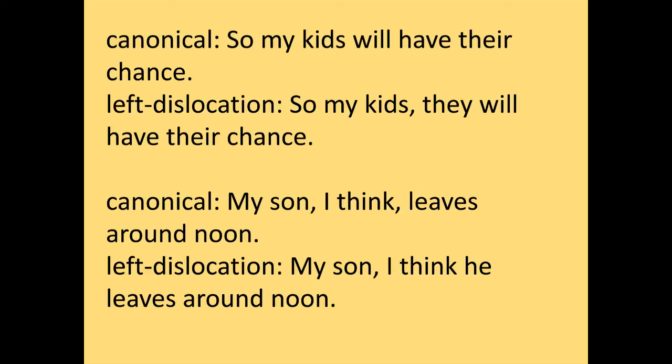The canonical version is 'My kids will have their chance.' This is left dislocation. 'Left' is a term biased towards writing systems like English that go from left to right. The point is: you take something out, put it to the beginning of a sentence, but crucially you stick something else in its place — almost always it's a noun phrase that you take out, and it's a pronoun that you stick in. So 'My son, I think he leaves around noon' is left dislocation. If you just said 'My son, I think, leaves around noon,' that would be canonical.